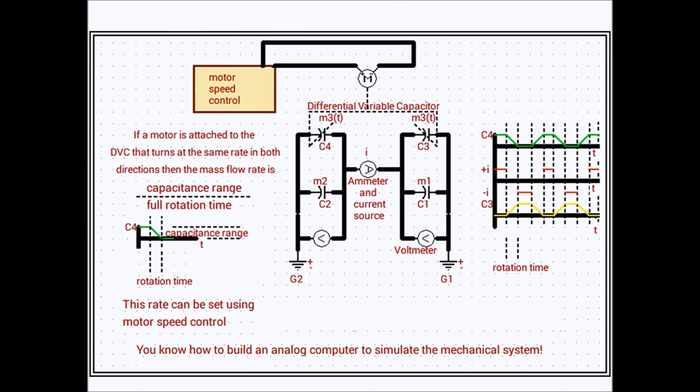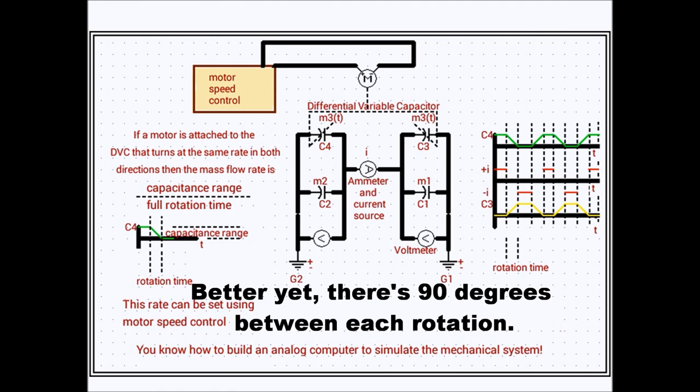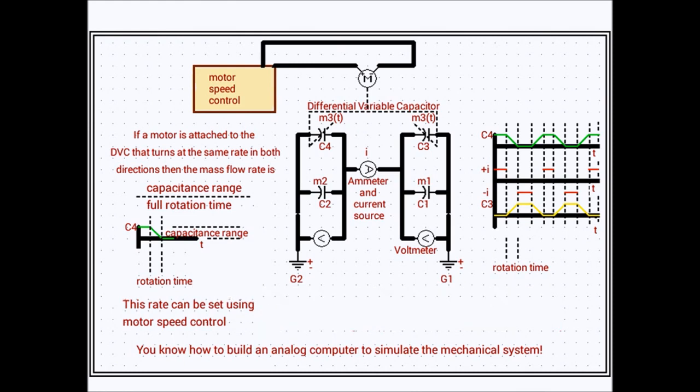Notice that the waveform shows that we have a 120 degree difference between when the capacitance starts to rotate the shaft. So every 120 degrees we get a rotation of the motor speed control. That is the phasing of this simulation sequence.